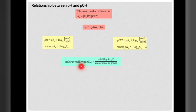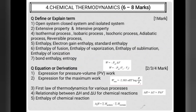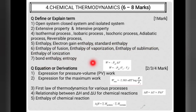The fourth topic, chemical thermodynamics, has the highest weightage of 6–8 marks. Many definitions are important: types of system — open, closed, and isolated system; extensive and intensive properties; types of processes — isothermal, isobaric, isochoric, adiabatic, reversible, and non-reversible. Also important are definitions of enthalpy, electron gain enthalpy, standard enthalpy, enthalpy of fusion, vaporization, sublimation, ionization, bond enthalpy, and entropy.